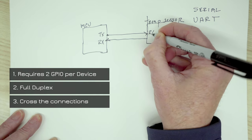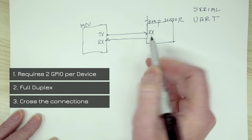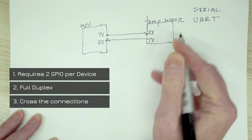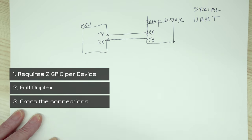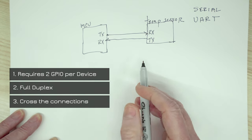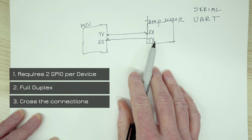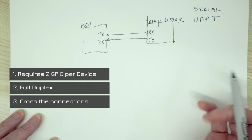So the transmit line here is going to go to the receive line here and the transmit on the temperature sensor is going to go to the receive line here. That's a gotcha sometimes when you're breadboarding is that you forget to do that and your serial communication doesn't work because they haven't been swapped.